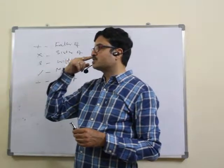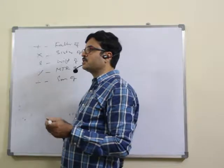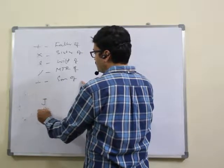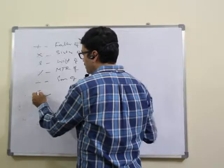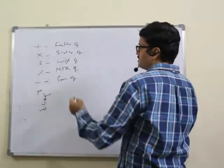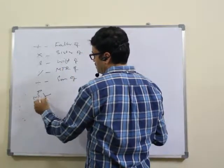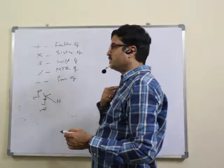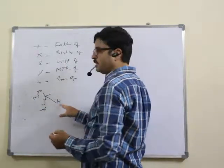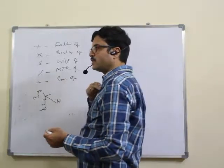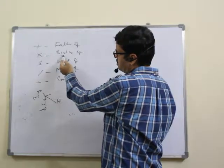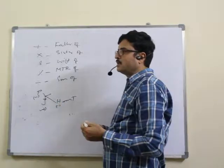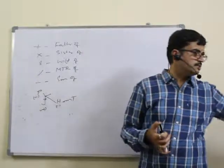Question 56: what should come in place of the question mark to establish that J is brother of T? J divided by P means J is son of P. P percent H means P is mother of H. H question-mark T. For J to be brother of T, H must be sister of T — so the symbol is 'into' (sister of). Answer: 56, first option.